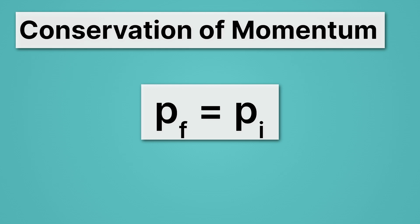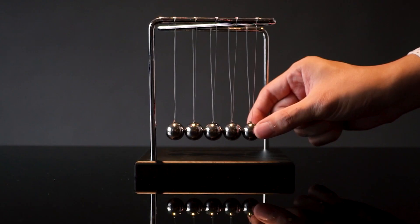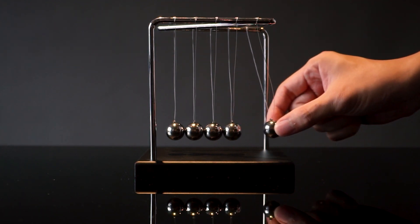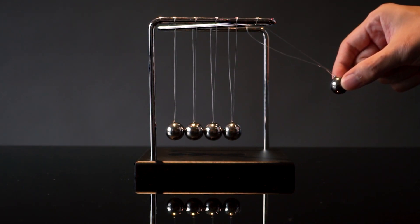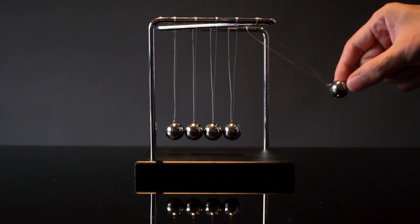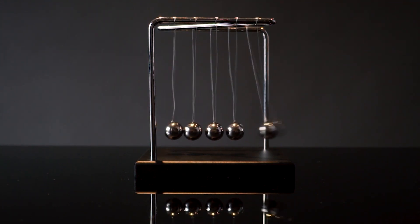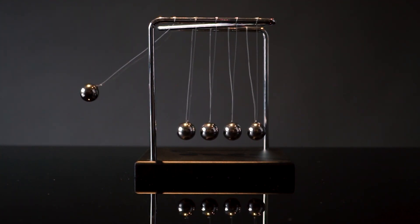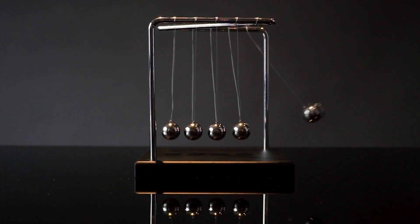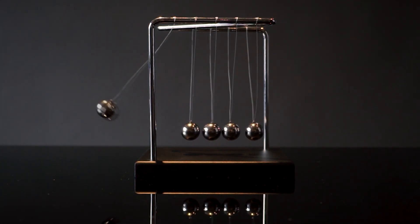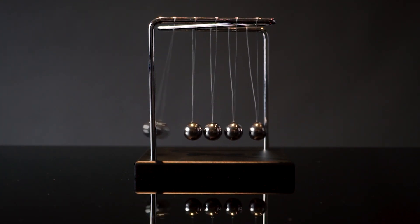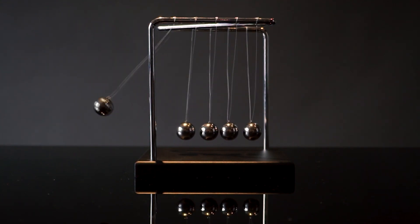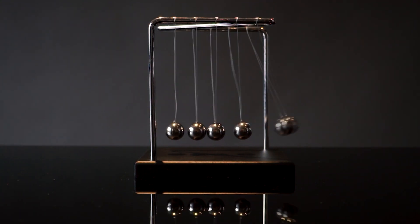We can do tons of cool stuff with this seemingly simple equation. Here we can see a nice example of the conservation of momentum. The metal sphere on one side is lifted up and then let go. That momentum is passed through each sphere through a series of collisions, and we see that on the far side, the ball rises to about the same height as it did before, because momentum is conserved.